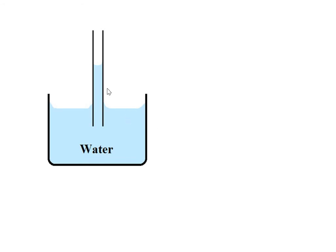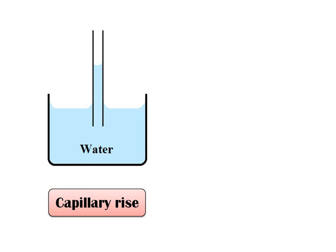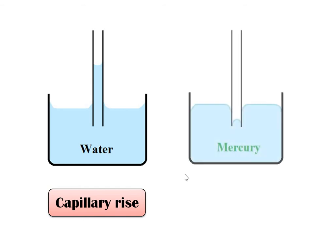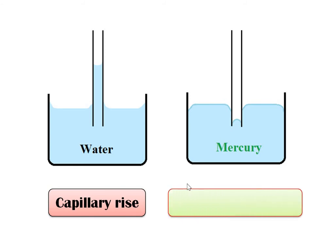When one end of the capillary tube is dipped in pure water, which partially or completely wets the solid, the liquid level in the capillary tube rises — this is called capillary rise. When the capillary tube is dipped in mercury, which does not wet the solid, the liquid level in the capillary drops down — this is called capillary depression.